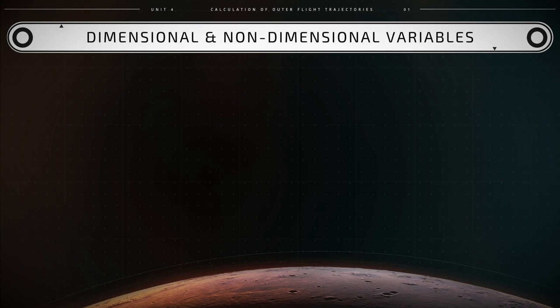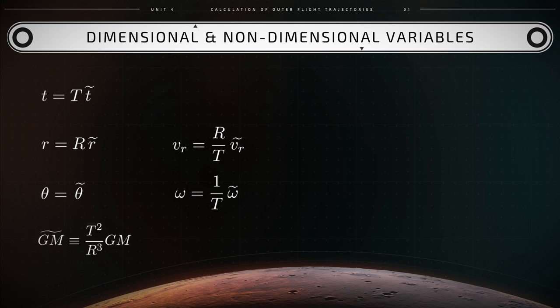The needed non-dimensional quantities are obtained from the following connections between dimensional and non-dimensional quantities. t-dimensional equals capital T times T tilde. r-dimensional equals capital R times R tilde. vr-dimensional equals capital R over capital T times vr tilde. theta remains equal to theta tilde. omega-dimensional equals one over capital T times omega tilde. And gm tilde equals capital T squared over r cubed times gm dimensional.